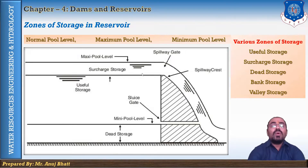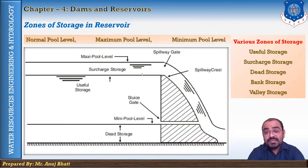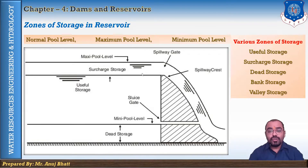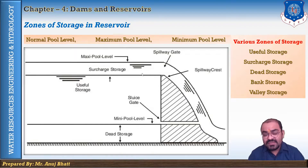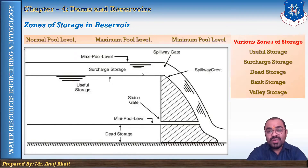The next is the bank storage. When the reservoir is filled up, a certain amount of water seeps into the permeable reservoir bank, and this water comes out as soon as the water level in the reservoir gets lower. This volume of water is known as the bank storage. It may amount to several percent of the reservoir volume, depending on the geological formation of the reservoir. Bank storage effectively increases the capacity of the reservoir above that indicated by the elevation-capacity curve.